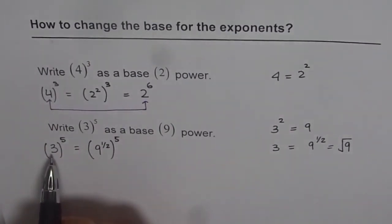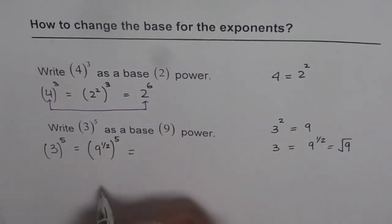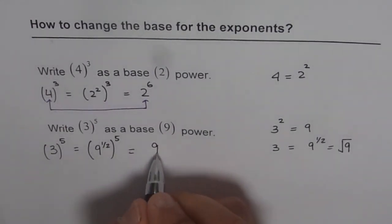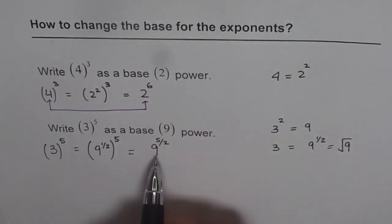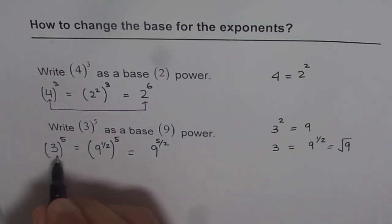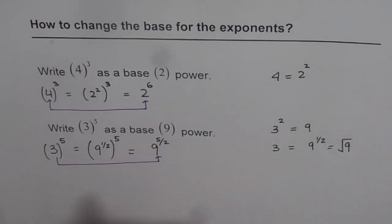So basically, we have written 3 as 9 to the power of half. Now, we'll apply the laws of exponents and we get 9 to the power of 5 over 2. So that is how we can change the base from 3 to 9. Do you see that? So that is the technique which you can always apply.